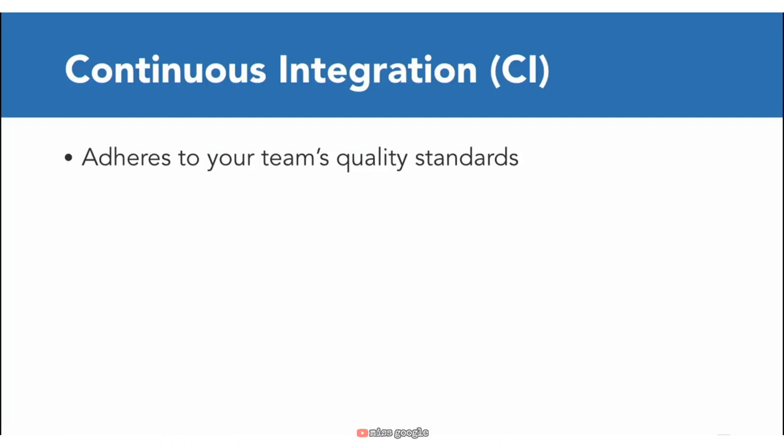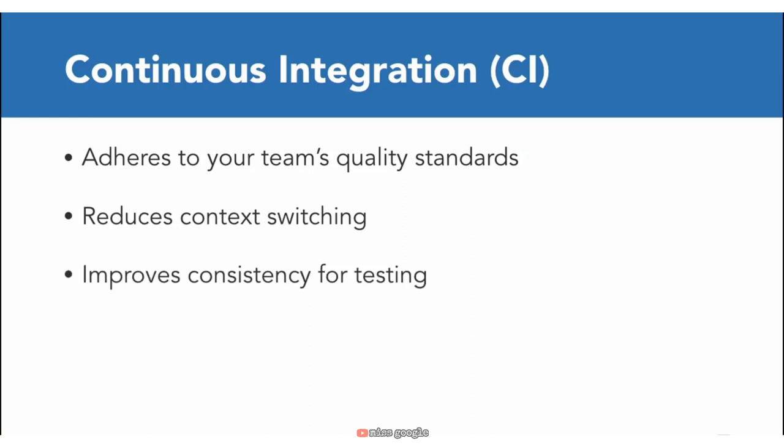Why exactly do I need this? This can reduce context switching for developers and improve consistency for testing. The goal is fewer bugs in production and faster feedback while developing. With CI, any time a commit is added to a branch, CI tests and builds can run on that version of the project and let you know if those changes pass the requirements and tests you want to enforce. This takes the human error aspect out of the equation and reduces the time it takes to check for consistency and code review.